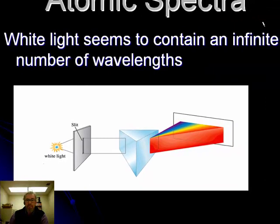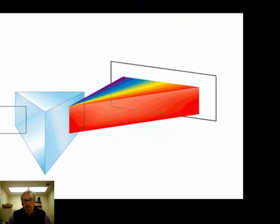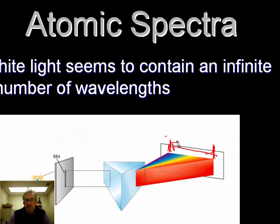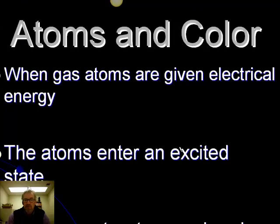White light seems to contain an infinite number of wavelengths. When we pass white light through a prism, we see a continuous spectrum that goes smoothly from purple to red with no discontinuity — a seamless transition from color to color. However, when you give gas atoms electrical energy, they enter an excited state, absorb the energy, and then return to normal, giving off light.